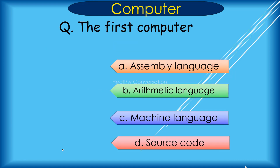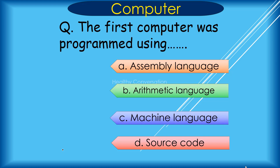Question: The first computer was programmed using dash. The options are: A. Assembly Language, B. Arithmetic Language, C. Machine Language, D. Source Code. Correct answer is D. Source Code.